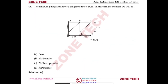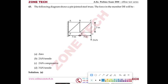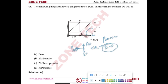Question number 43: a pin jointed steel truss is given with a 20 kN load at point D. Find the force in member DE. Taking equilibrium at joint D, with the downward force of 20 kN applied, and applying ΣFx = 0, the force P_ED = 0. Answer: A.